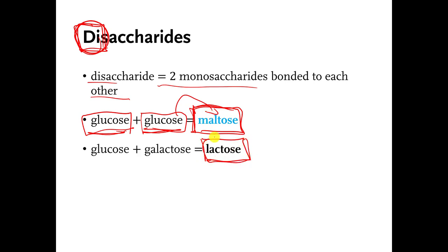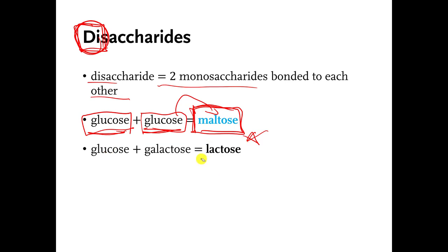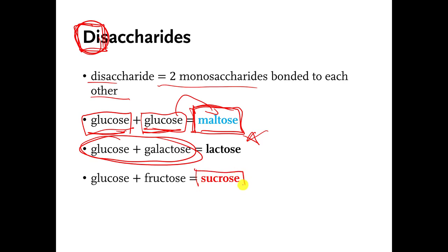Lactose — you might have heard of people who are lactose intolerant. Lactose is a disaccharide made by taking a glucose molecule and connecting it to another monosaccharide called galactose, making the disaccharide called lactose. People who are lactose intolerant are unable to break the attachment between these two sugar molecules. The one that you and I eat most frequently is sucrose — we just call it table sugar. That is a disaccharide made from glucose and fructose, which is another monosaccharide.